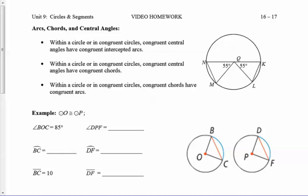Within a circle, or in congruent circles, congruent central angles have congruent intercepted arcs. For example, if both central angles are 55 degrees, then the arcs are the same and we can mark those as congruent. The length of arc NM is congruent to the length of arc KL, which also means the corresponding chords are congruent. If the angles are the same, then the arcs are the same; if the arcs are the same, then the chords are the same — and vice versa. These three things are all interrelated.